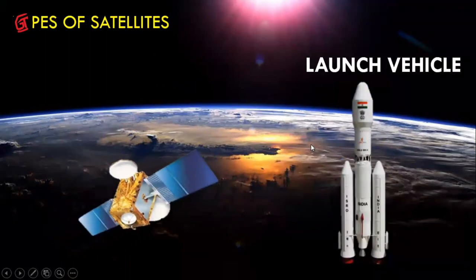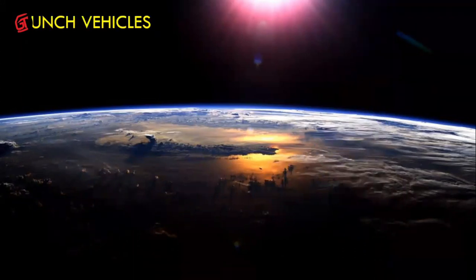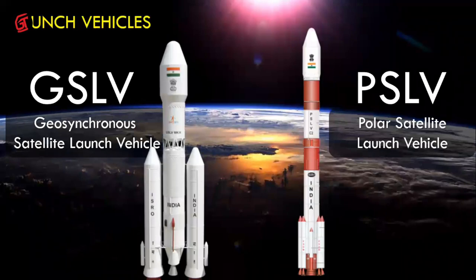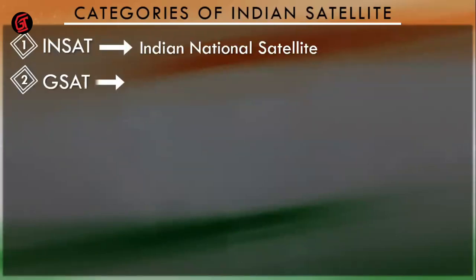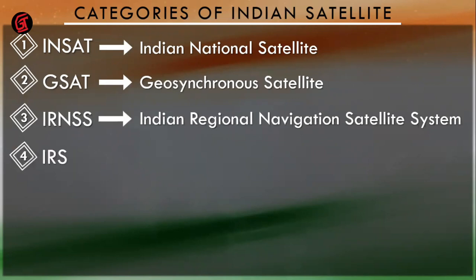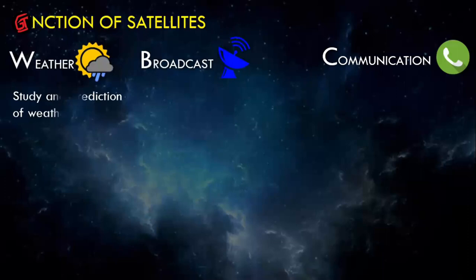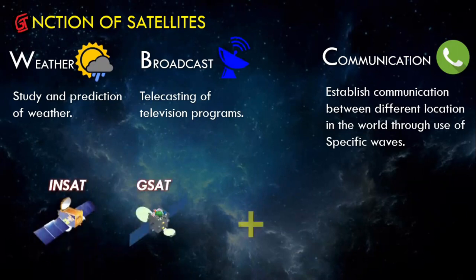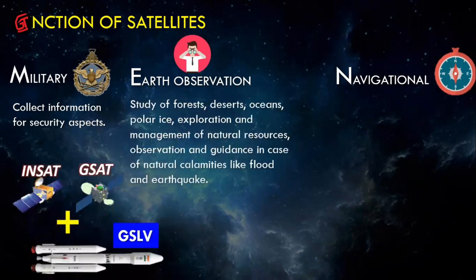India also has launch vehicles. The satellite is placed at the top and then launched into space. There are two types: GSLV (Geosynchronous Satellite Launch Vehicle) and PSLV (Polar Satellite Launch Vehicle). Once placed in orbit, all satellites perform their designated functions. The functions include weather prediction, television broadcasting, cable television, communication, and military observation of the earth.